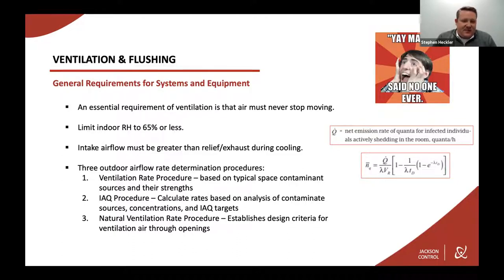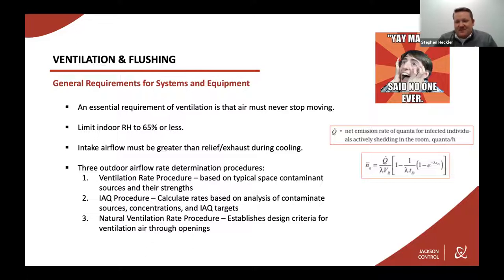This particular equation is used to determine the variable Q-dot — the net emission rate of quanta for infected individuals actively shedding in the room. There are three determination procedures. The first is the ventilation rate procedure, where you base calculations on typical space contaminant sources and their strengths.